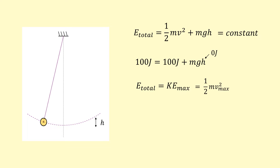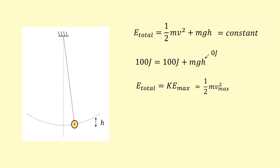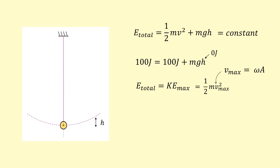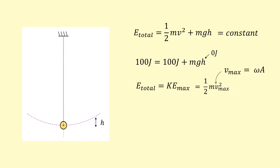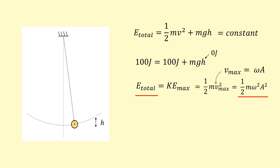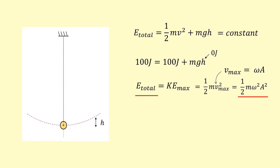We can write ½mv²_max equal to the total energy. v_max can be written as ωa, where ω is the angular frequency and a is the amplitude of the oscillation — which is not the same as the height. Amplitude is how far the pendulum is displaced from the equilibrium. Substituting this in gives us a very useful equation: total energy = ½mω²a².